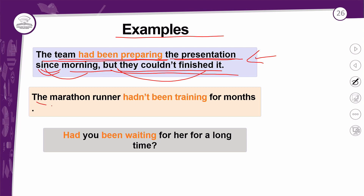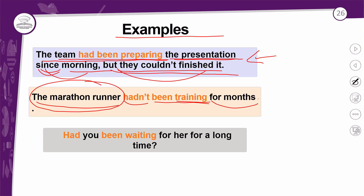Na negativa: 'The marathon runner hadn't been training for months.' O sujeito é 'the marathon runner', o corredor da maratona; 'hadn't', negação, ou 'had not'; 'been training' — aqui está o foco do passado perfeito contínuo, na ação com o ING. Não estava treinando por meses — vou traduzir assim como se fosse passado contínuo, porque fica melhor para vocês entenderem.